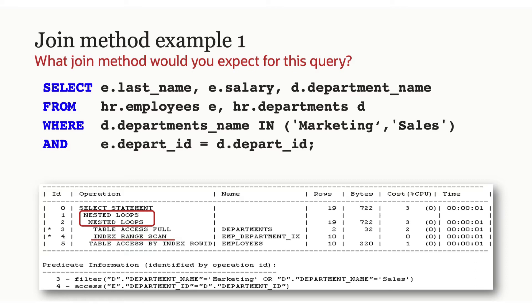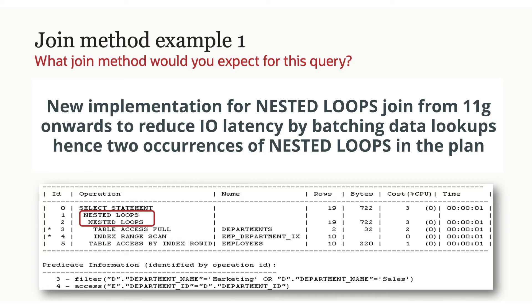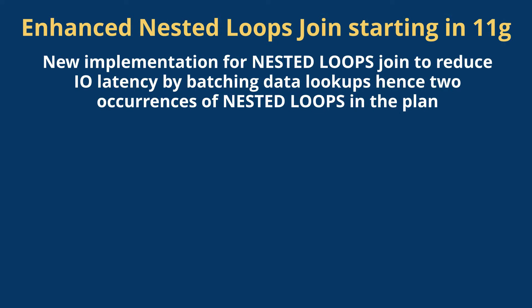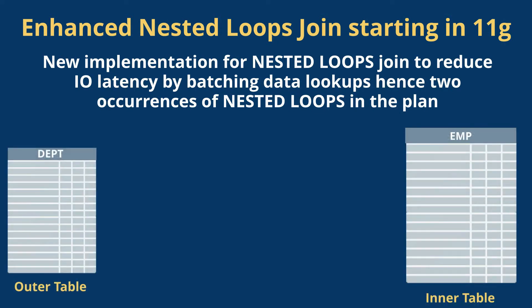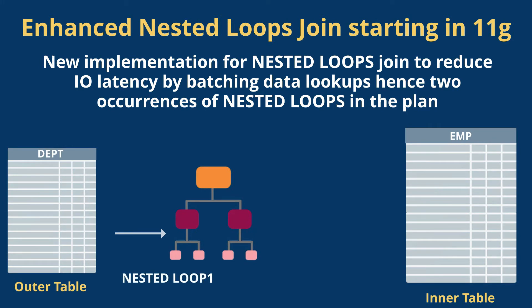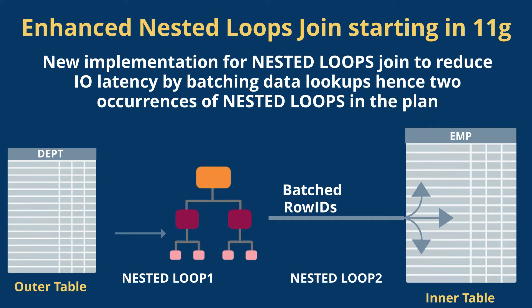Starting in 11G, you'll notice that the nested loops plan often shows the nested loop operator twice. The reason is that we changed the implementation of a nested loop join in 11G. We initially do the lookup of the index — the join between the outer table and the index lookup is done in the first operator — and then the second nested loop operator batches up the row IDs coming out of that index access to minimize the number of single block reads when retrieving the corresponding rows from the employees table.